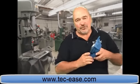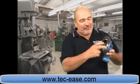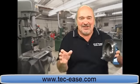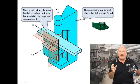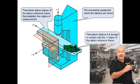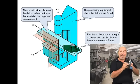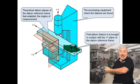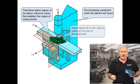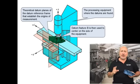When I hear a trainer say that this is datum A, I cringe. Datum feature A establishes a plane in the equipment. The bore that is datum feature B is used to line the part up with the axes of the equipment. This axis is the intersection of two datum planes.